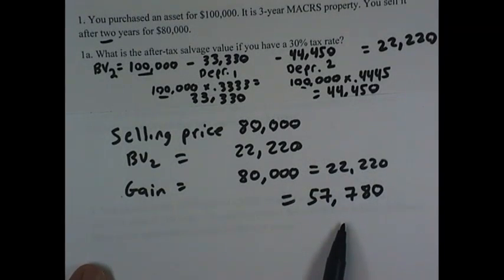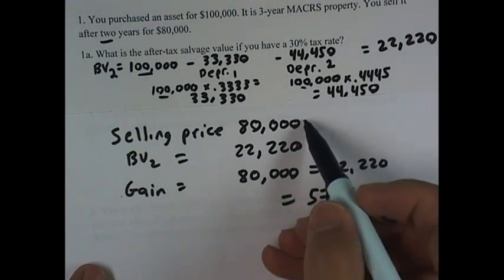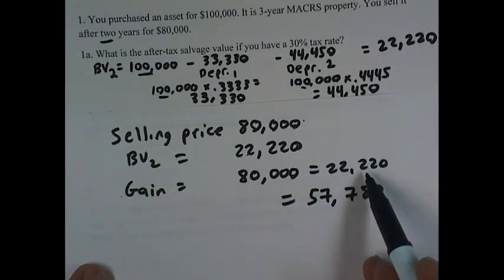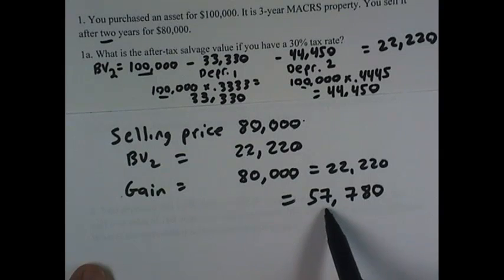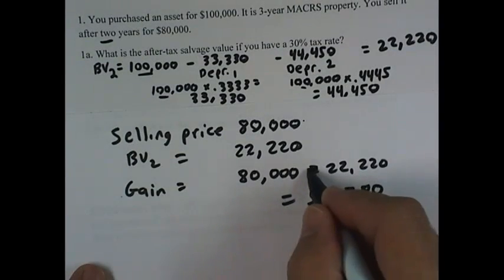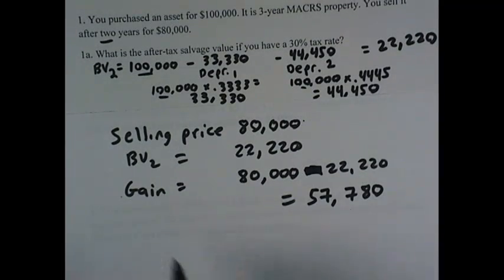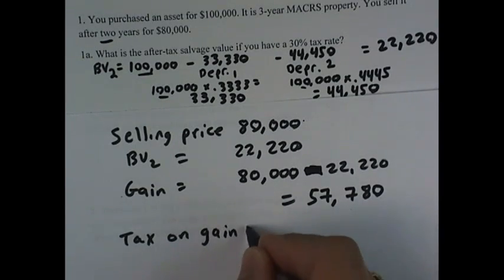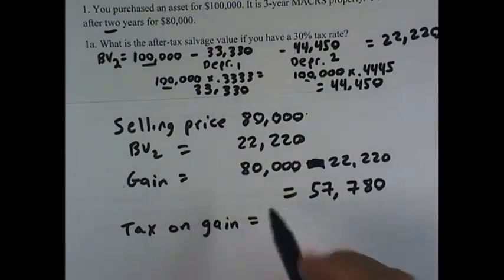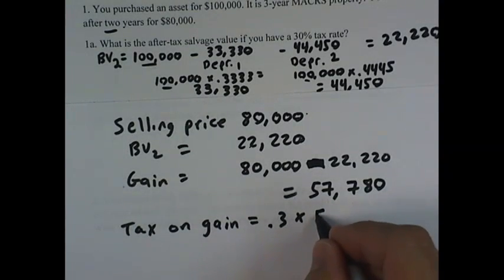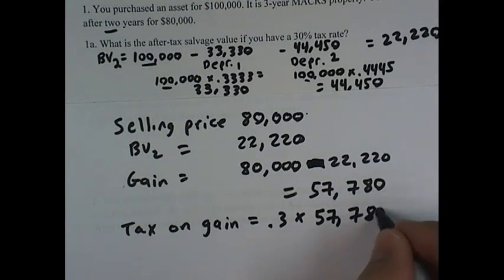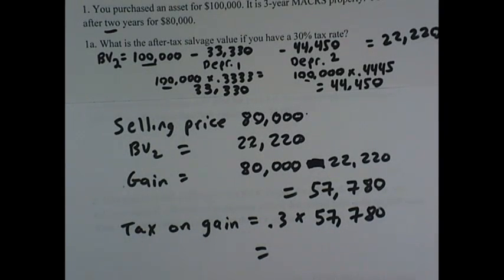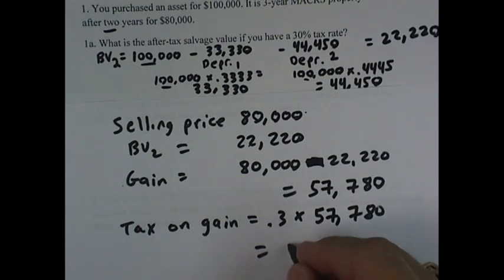That gain is what will be taxed. We're going to sell it for $80,000. We can recover the book value tax free. The gain of $57,780 is going to be taxed. The tax on the gain will be our tax rate of 30% times that gain of $57,780, so the taxes are $17,334.